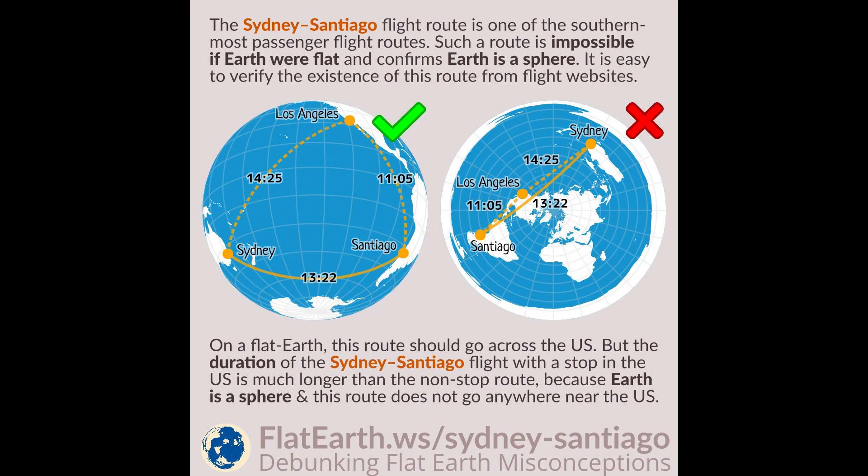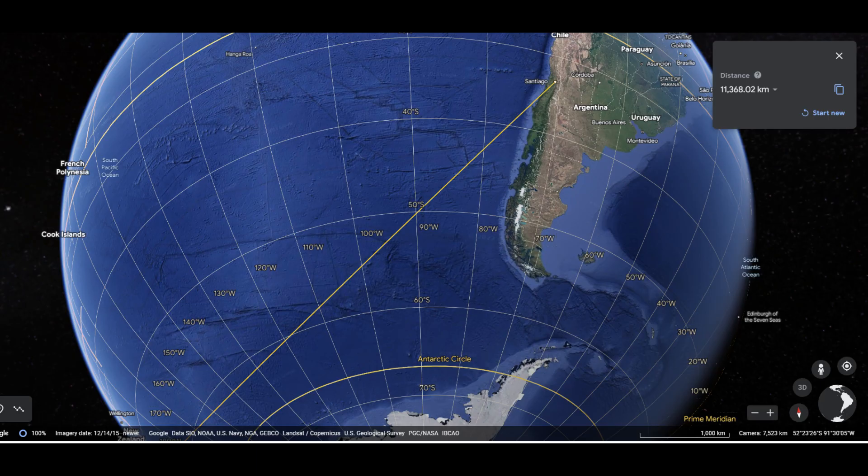Hey everyone, how's it going? Flight routes and the Flat Earth map. Sydney to Santiago flight route and distance. One of the key bits of missing information is that at the equator, the degree of longitude is the same as the degree of latitude, about 111 kilometres.